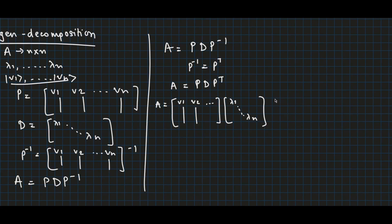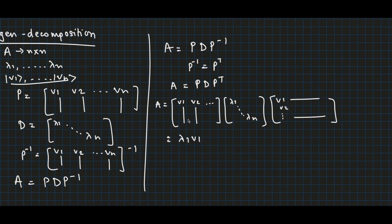Therefore A can be decomposed into three matrices P, D, and P-transpose. When we multiply these out, we get lambda-1 times v1 v1-transpose plus lambda-2 times v2 v2-transpose, continuing through lambda-n times vn vn-transpose.